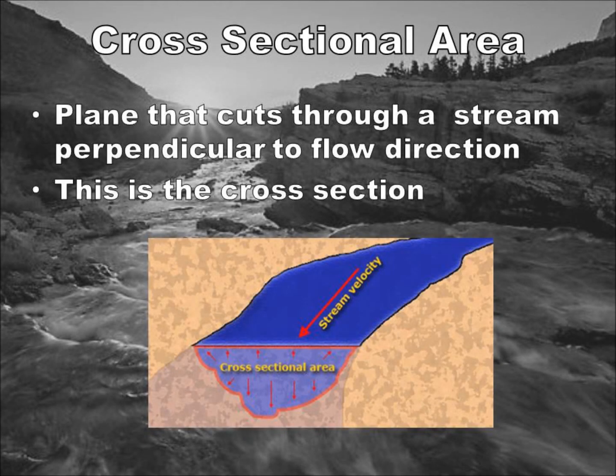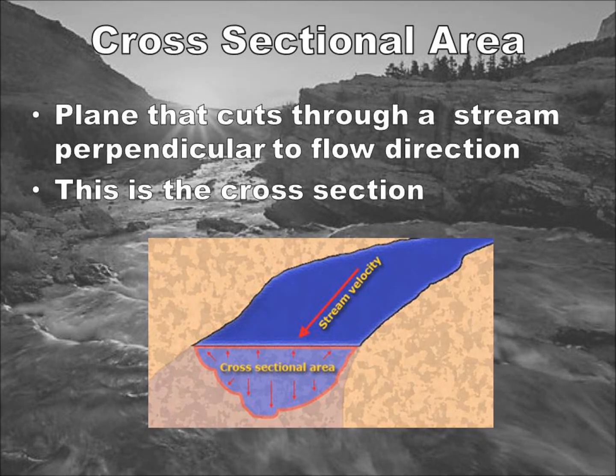That covers velocity — now on to the other important determiner: flow area. A cross section is the area of an item looking across its face. In the case of a stream, imagine a plane going from edge to edge and all the way to the bottom. If we froze the water in time and looked at it from the path of the water, we would see a roughly semi-circular shape — this shape represents a cross-sectional area.